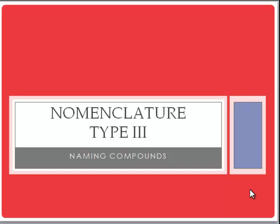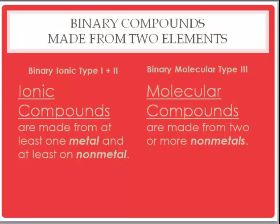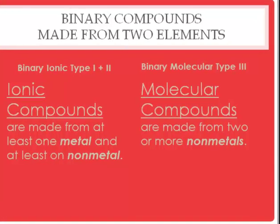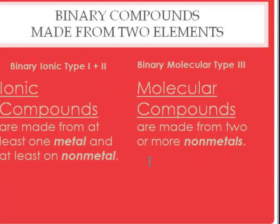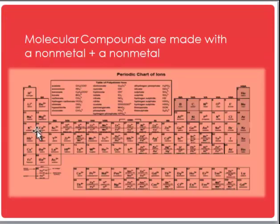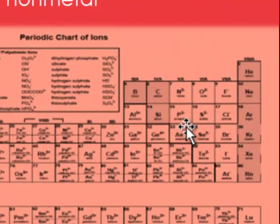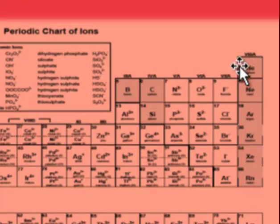The name of today's video is Nomenclature, Type 3. There are three types of binary compounds. We've already discussed binary ionic, Type 1 and 2. Today's main focus is binary molecular, Type 3. These are made from two non-metals. The non-metals are on the right-hand side of the staircase, and so both elements come from this general region of the periodic table.